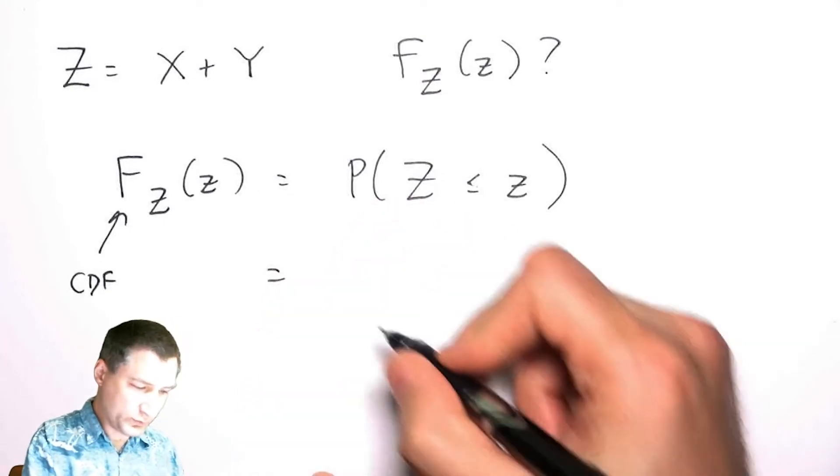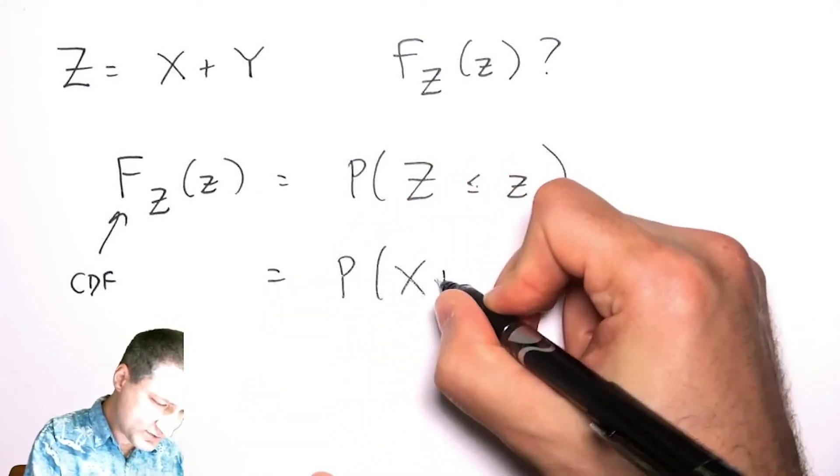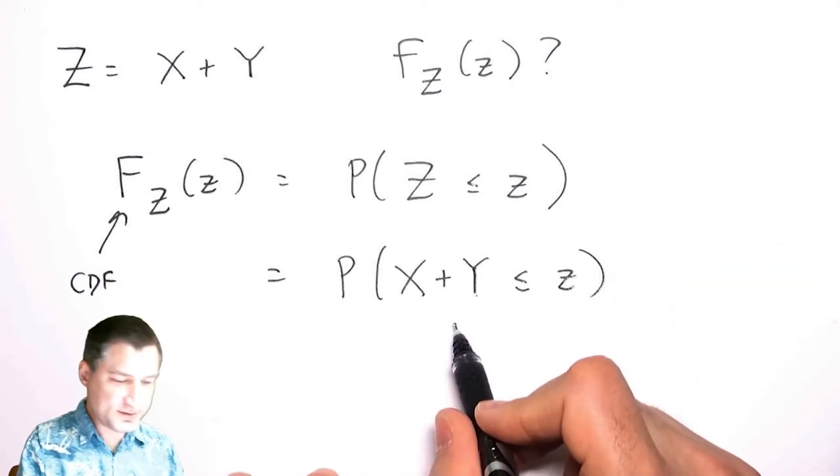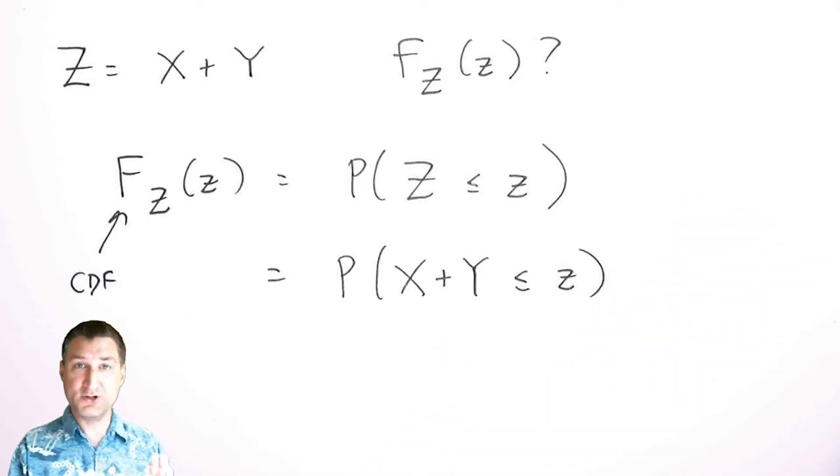Which is in my case the probability that X plus Y is less than some number. As soon as I do this, I'm immediately in the world where I can use the joint PDF of X and Y to compute this number.